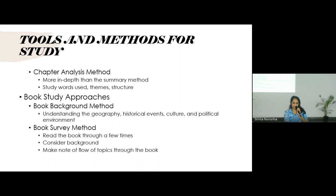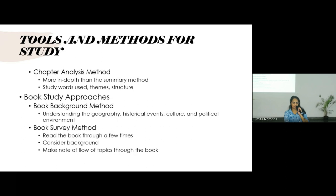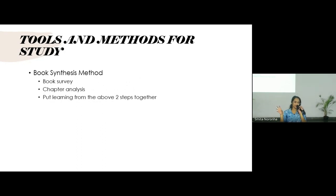The book synthesis method takes the book survey method and the chapter analysis method and puts them together. We do an overall survey of the whole book, then go into each chapter and study it in detail, then get an overall message — what is the message of each chapter, the themes in each chapter, in much more detail than the book survey.